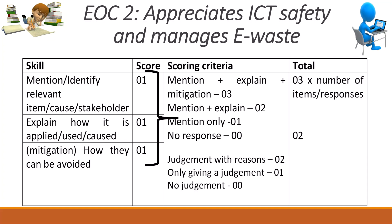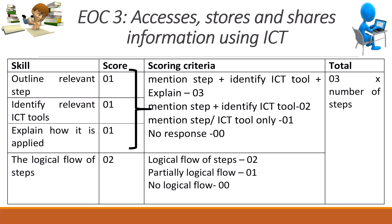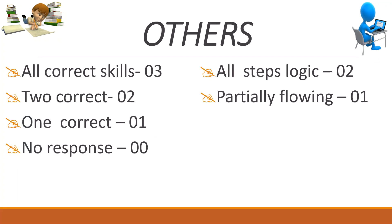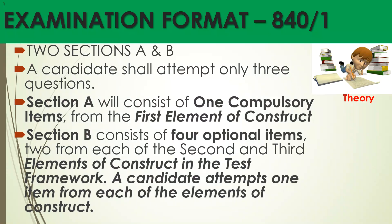Please take time and go through this video from start to end. For element of construct 3 — where the learner accesses, stores and shares information using ICT — the skills we look at are: has the learner managed to outline a relevant step, identify relevant ICT tools, explain how it is applied, and show logical flow of the steps. All correct steps scores 3 marks; two correct scores 2; one correct scores 1; no response scores zero. Steps following the correct order scores 2 marks; partially flowing scores 1 mark.